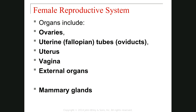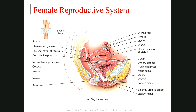In this picture you can see the different organs of the female reproductive system. In this sagittal section, here is the left ovary. Then we have a tube called the oviduct or uterine tube. After that, we have the sac-like structure which is the uterus. After the uterus, you can see the muscular tube called vagina. And the last part is the external genitalia.